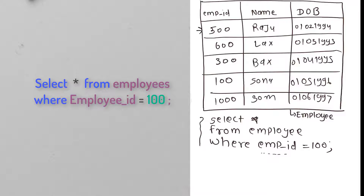As soon as this query executes, it will start pointing at the first row. Since we have employee_id in the WHERE condition, it will pick up the value 500 and replace it in the expression. It will internally evaluate whether the left-hand side value equals the right-hand side value. In our case 500 ≠ 100, so it will mark this row as NO — meaning it won't be displayed on the screen.